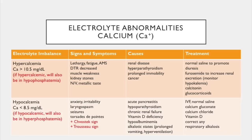Electrolyte imbalances in renal failure — Hypercalcemia: calcium greater than 10.5 mg/dL, typically accompanied by hypophosphatemia. Signs and symptoms: lethargy, fatigue, altered mental status, decreased deep tendon reflexes, muscle weakness, kidney stones, nausea, vomiting, and metallic taste. Causes: renal disease, hyperparathyroidism (too much calcium released from bones), prolonged immobility, and cancer malignancies. Treatment: normal saline to promote diuresis, furosemide to increase renal excretion (watch for hypokalemia), calcitonin to return calcium to bones, and glucocorticoids.